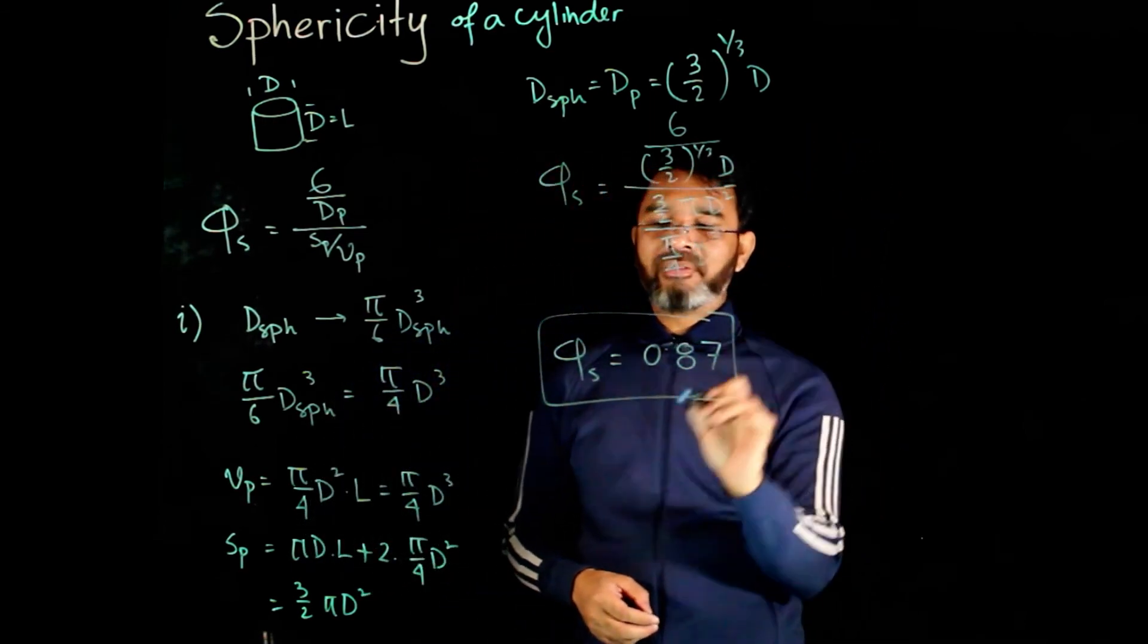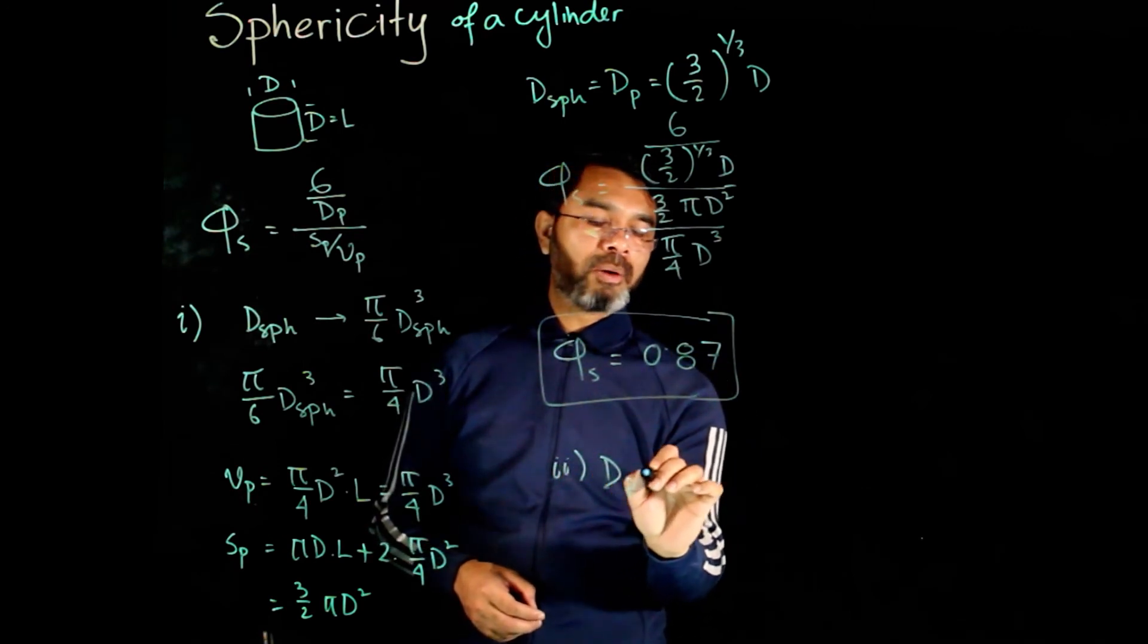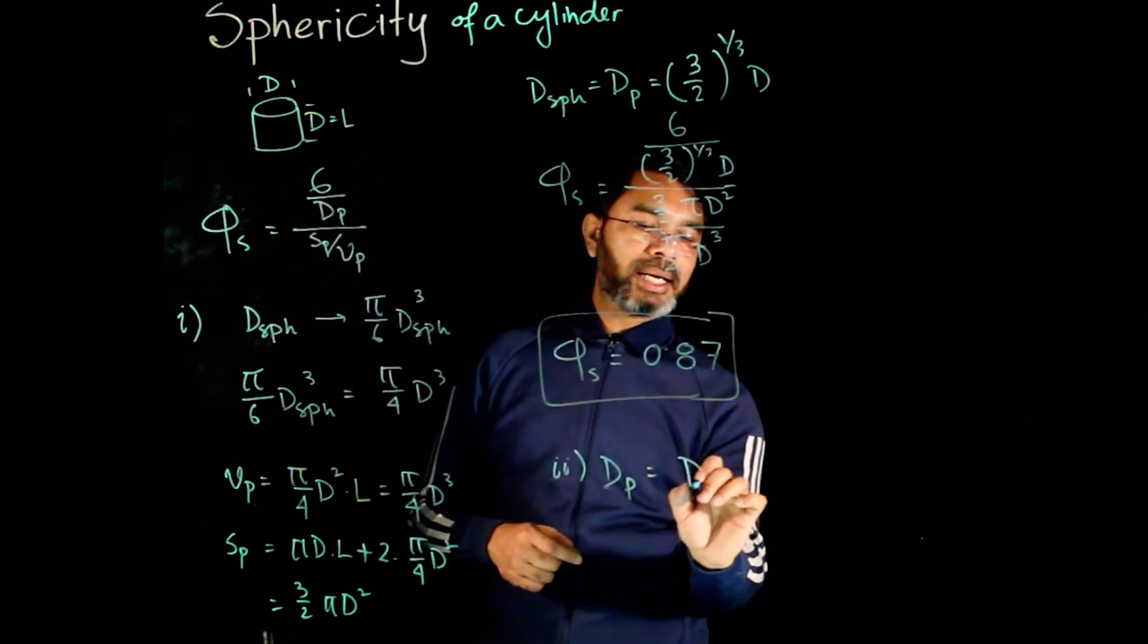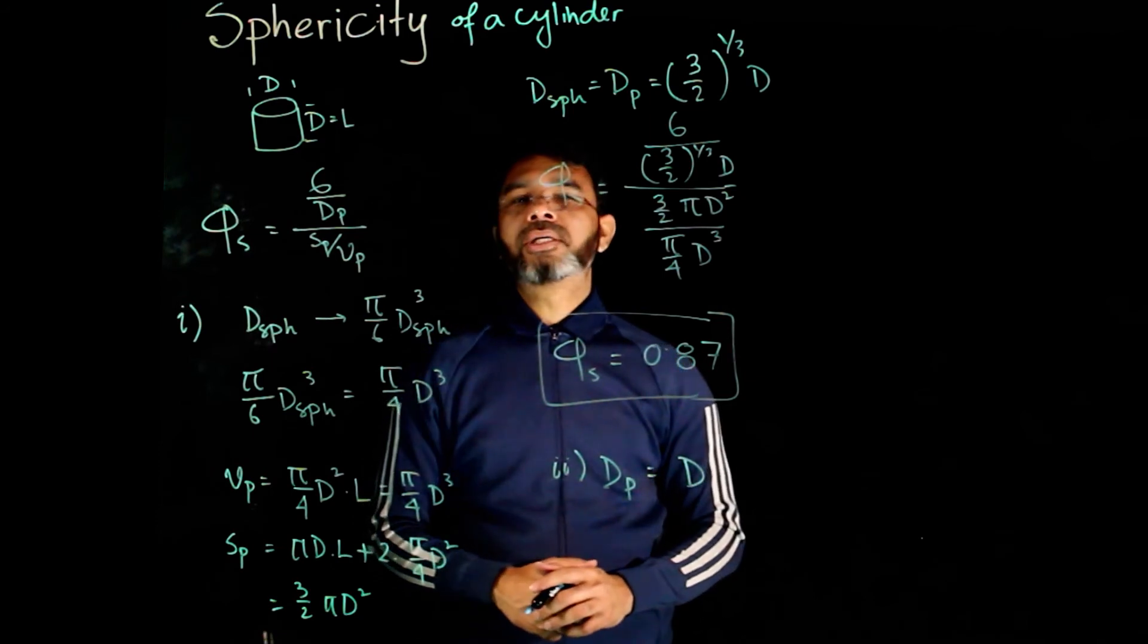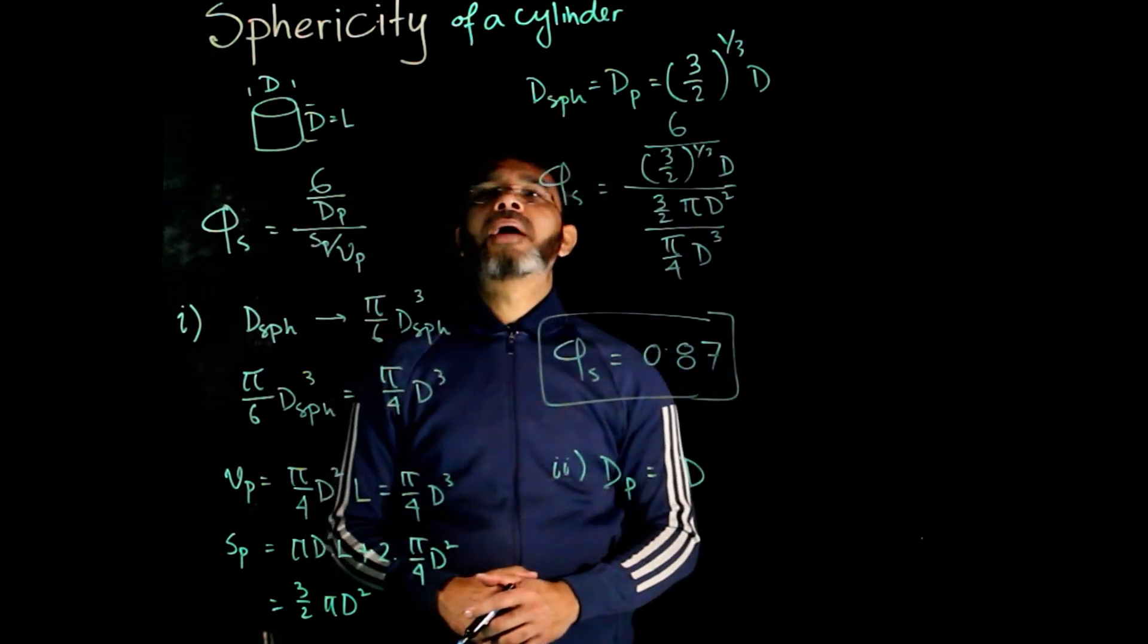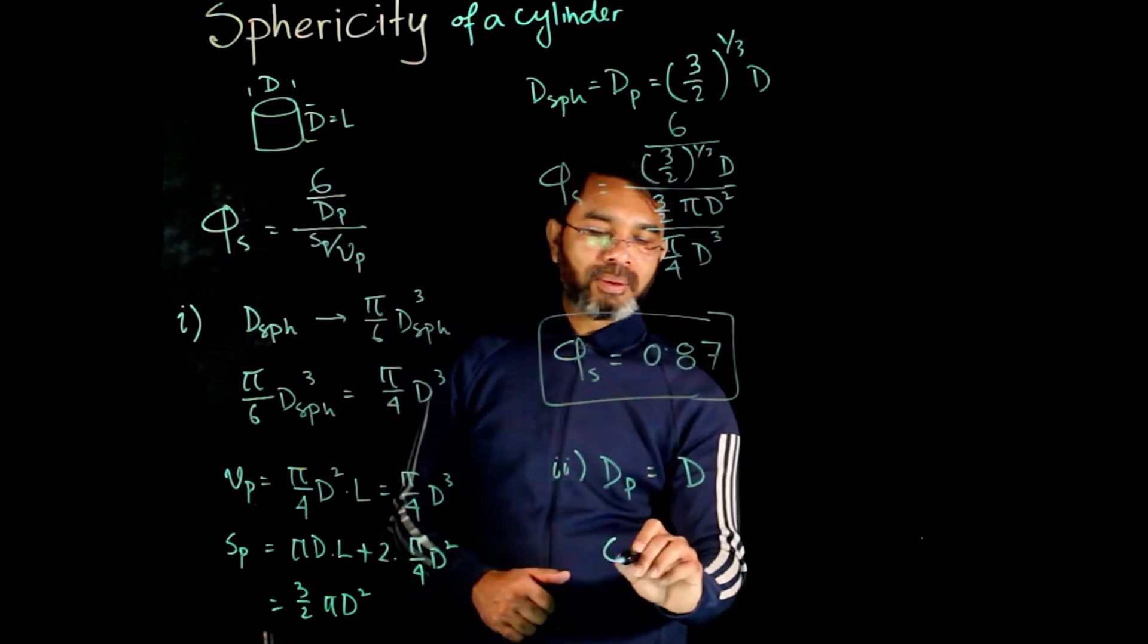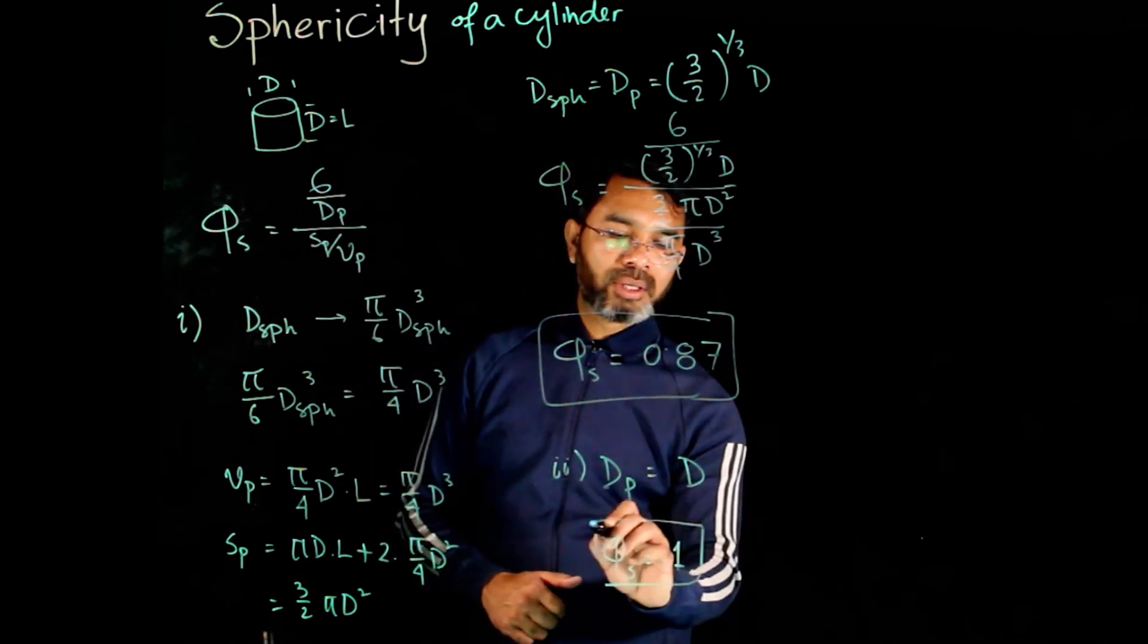Now, according to the second definition, if we take the equivalent diameter equals the diameter of the cylinder itself, we discuss two ways to define the equivalent diameter for regular shaped particles. For short cylinder, when the length equals its diameter, the equivalent diameter is taken as the diameter of the cylinder. If you do this, you will end up getting sphericity to be 1 for this case as well.